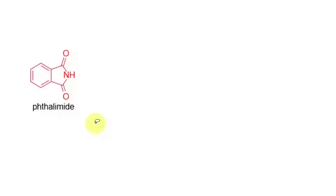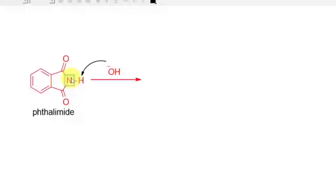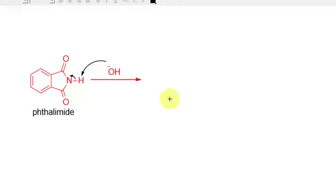Gabriel synthesis starts with phthalimide reacting with a base — here, potassium hydroxide (KOH). The base picks up a proton; the hydrogen on nitrogen is the most acidic hydrogen in phthalimide. OH⁻ picks up this proton to become water, and the N–H bond breaks, with both electrons going to nitrogen.